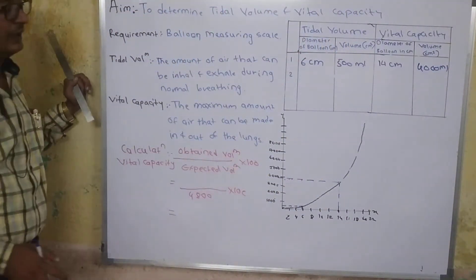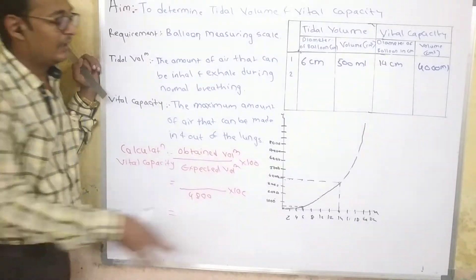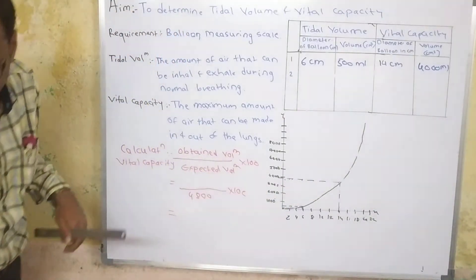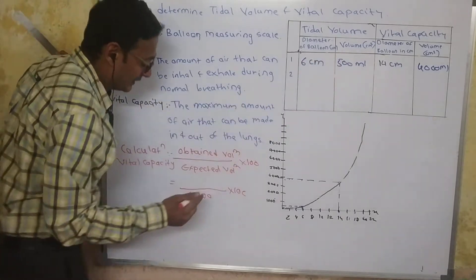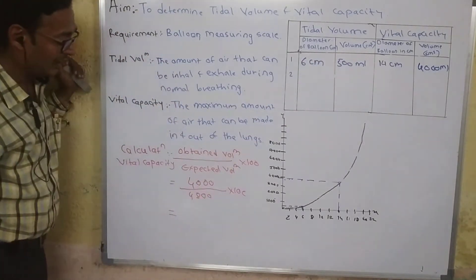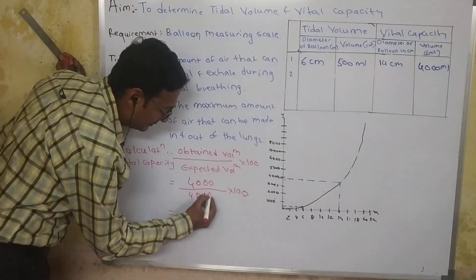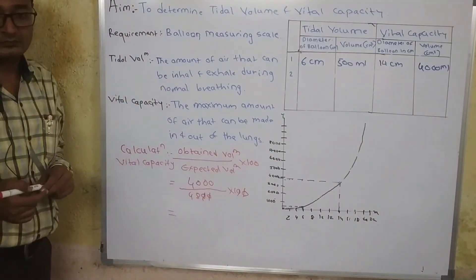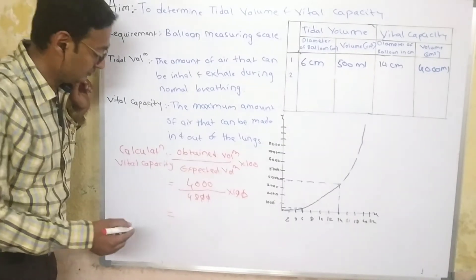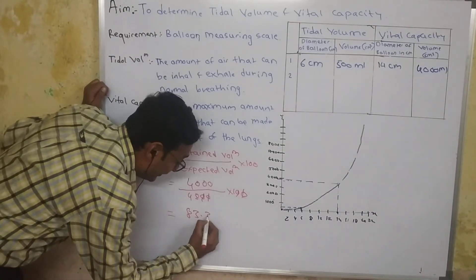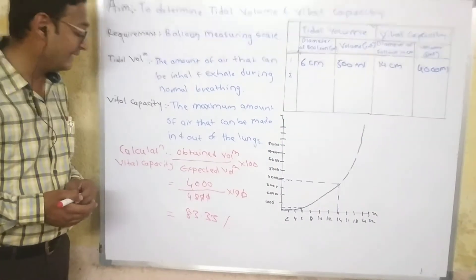Now we will calculate the vital capacity. You have to take three readings each of tidal volume and vital capacity, calculate the mean, and then plot the graph. Now we will calculate the percentage vital capacity of the lungs. The obtained vital capacity is 4000 mL. The expected vital capacity is 4800 mL. So the percentage is 4000 divided by 4800 into 100, which is 83.33%. Anything above 80% is considered normal vital capacity.